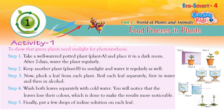Activity 1: To show that green plants need sunlight for photosynthesis. Step 1: Take a well-watered potted plant and place it in a dark room. After 2 days, water the plant regularly. Step 2: Keep another plant, Plant B, in sunlight and water it regularly as well.